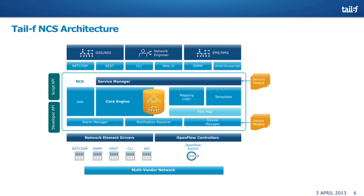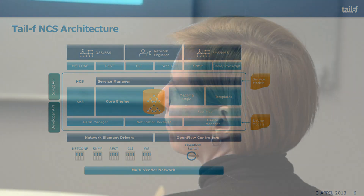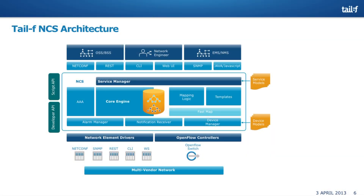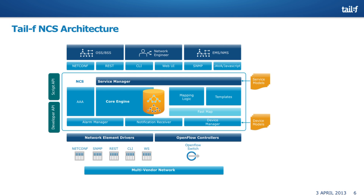The actual mapping can be expressed in templates — taking a service model and doing a template for the device config. That's how network engineers think: you have a CLI snippet for a VPN for one vendor, a CLI snippet for a VPN for another vendor, and you use variables in the template that grab data from the service model. If you're a programmer, you can do it in Java mapping logic, which is also used for more complex scenarios where you need to call out to PCE engines or inventory systems. Importantly, in the mapping logic, as a programmer you don't see CLIs or SNMP object identifiers — you work with data structures from the database as defined by the data models.